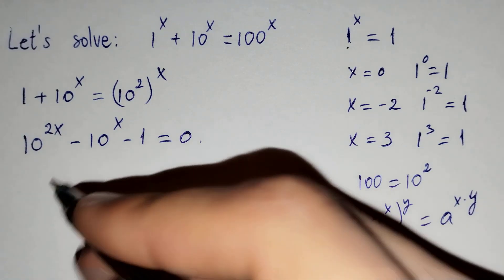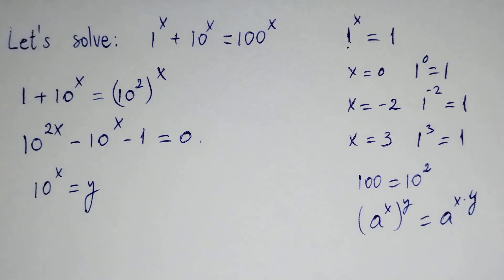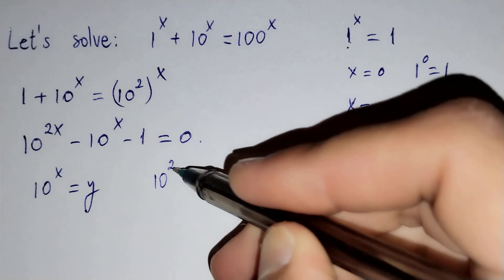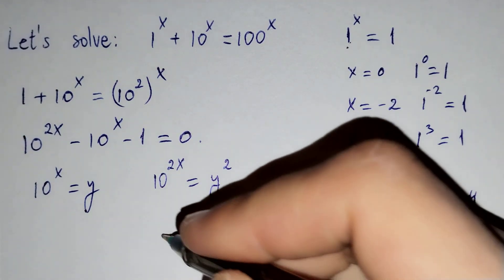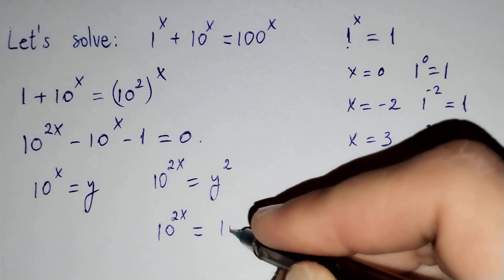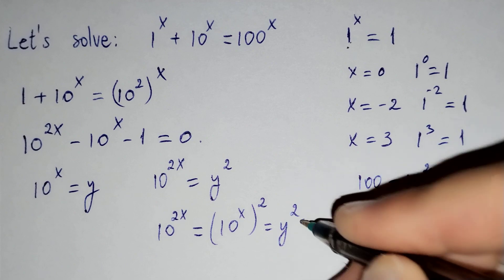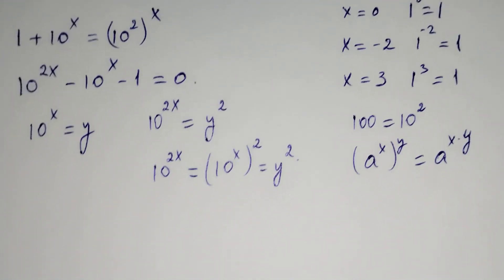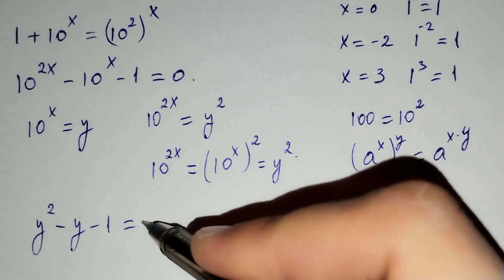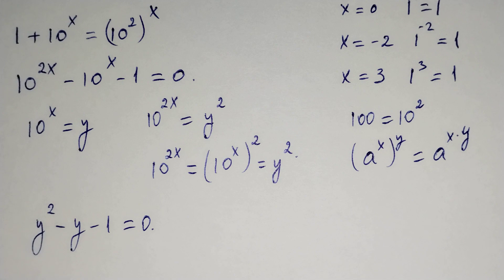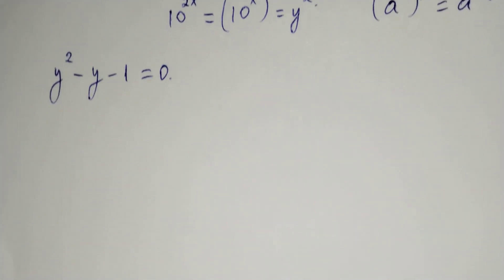If we let 10 power x equal to y, then 10 power 2x equals to y squared, because 10 power x, power 2 gives y squared. Substituting, we get the quadratic equation: y squared minus y minus 1 equals to 0.